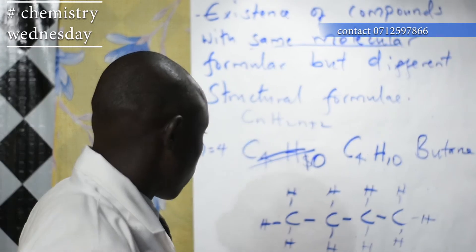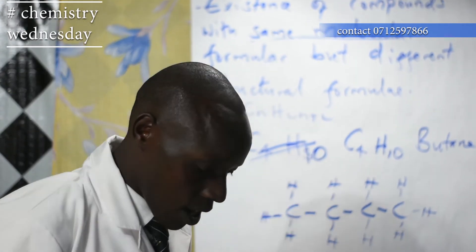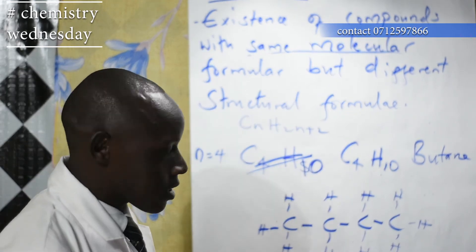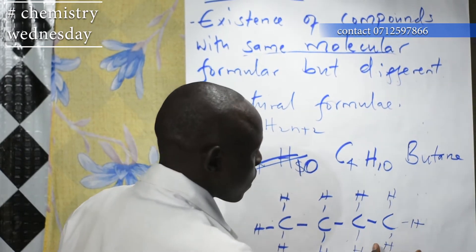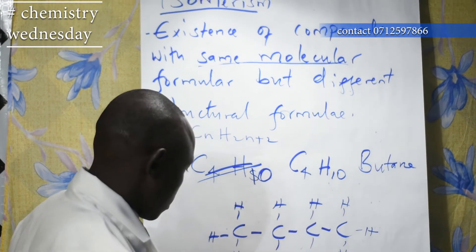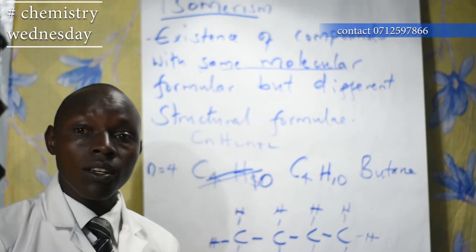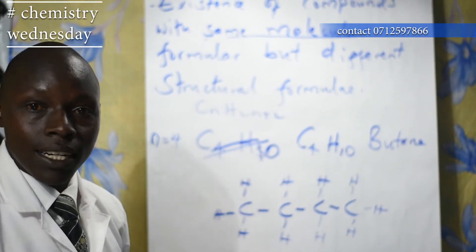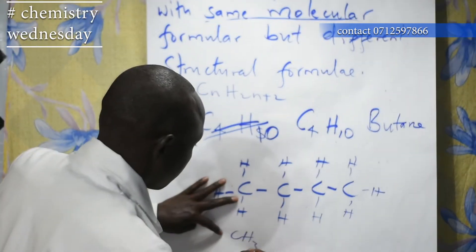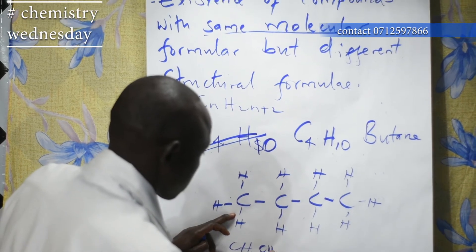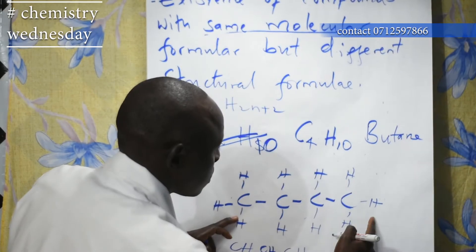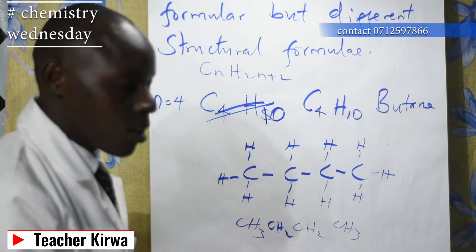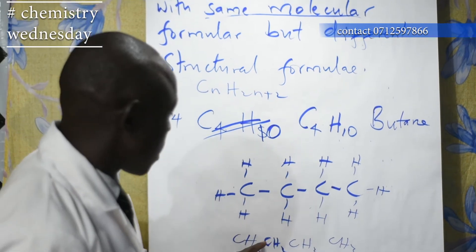That is how the structural formula of butane looks like. Looking at this structure closely, the structural formula can be open the way this one is, or it can be condensed. In condensed form: the end carbons are CH3, and the middle carbons are CH2. So every carbon at the end has 3 hydrogens; the rest have 2 hydrogens.